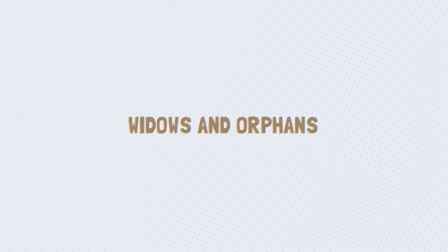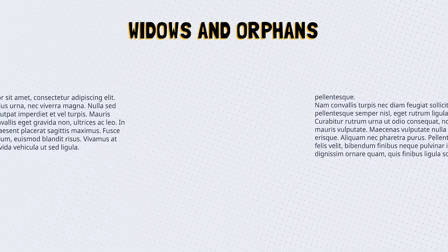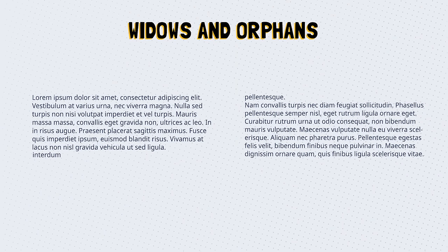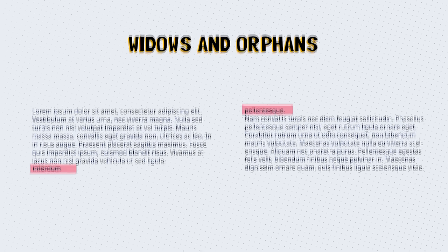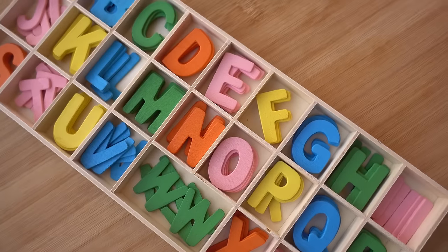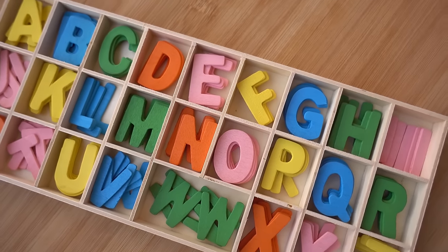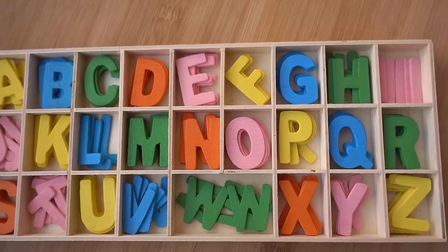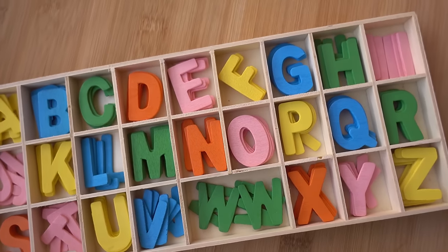What are widows and orphans? Widows and orphans are seen when typesetting text. A widow is a short line or word at the end of a paragraph or column, causing too much white space at the bottom of a page. An orphan is a short line or a single word at the beginning of a column or page. And those are 18 typography terms you should know. In the next lesson, we will take a look at the different logo design styles.